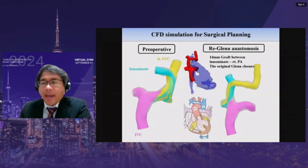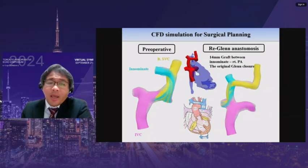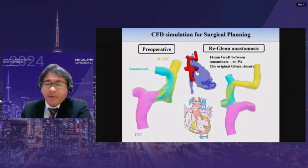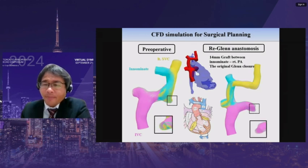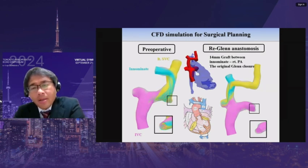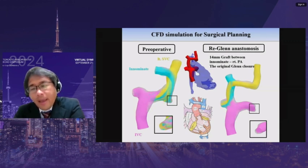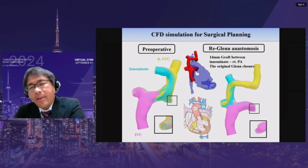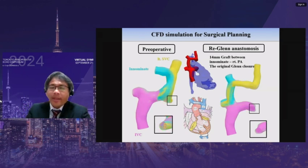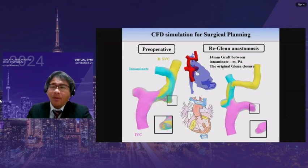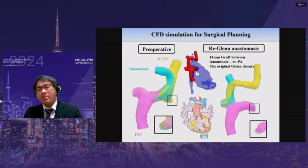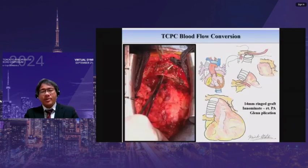We go back to Case 2. Preoperatively, as measured by 4D flow MRI, IVC flow was supplied dominantly to the right pulmonary artery. We decided to ligate the original left-side conduit in addition to a new graft from the inferior vena cava to the right pulmonary artery. Here we show the surgical video.